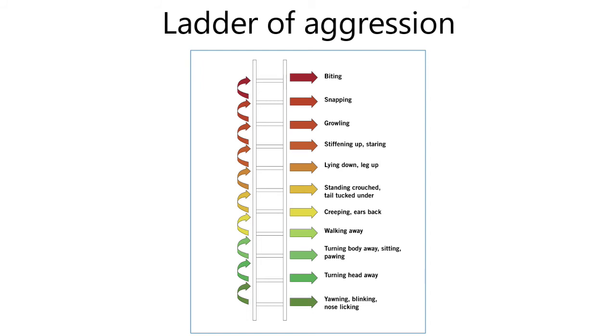So notice at the bottom you've got behaviors at the green end where the dog is saying I need space. If we don't listen to those behaviors, the dog is going to go up that ladder to the yellow end, and if we continue to ignore those behaviors, they will escalate to the red end.